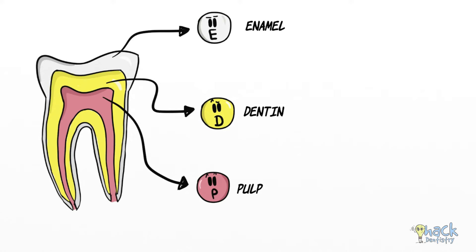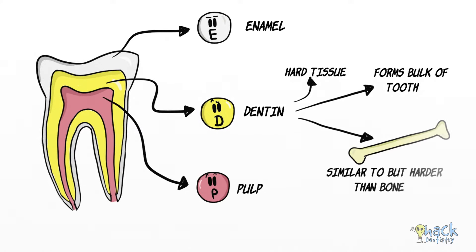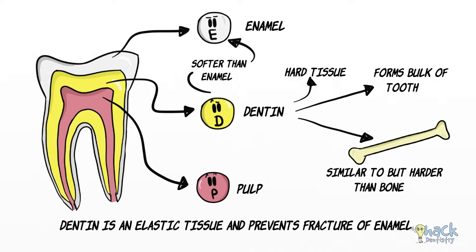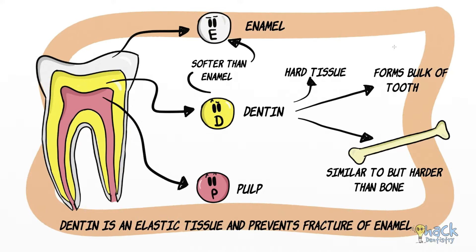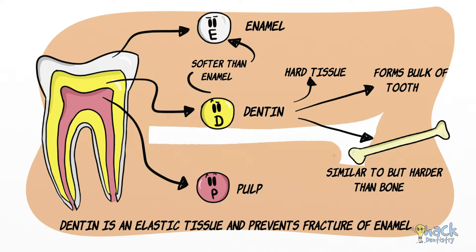Dentine is a hard tissue that forms the bulk of the tooth. It is similar to bone but is slightly harder, although softer than enamel. Dentine is elastic and provides protection in that it prevents the fracture of the overlying enamel.